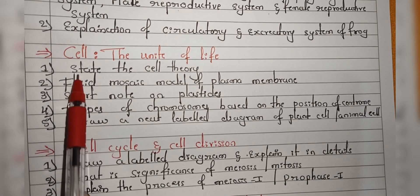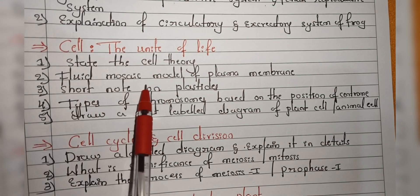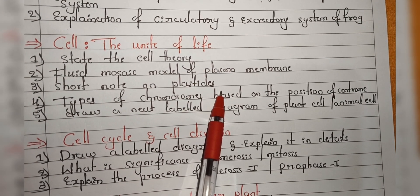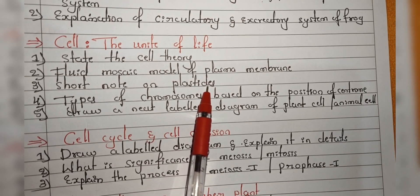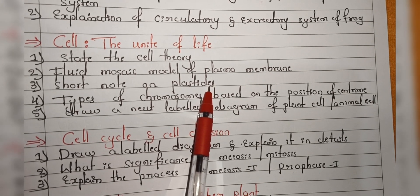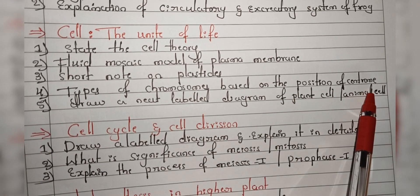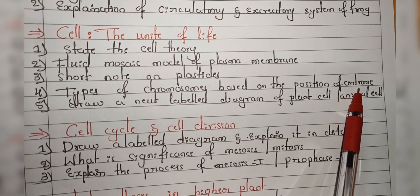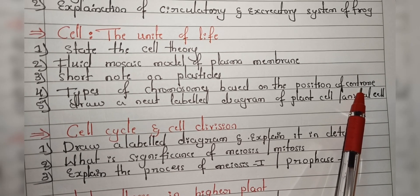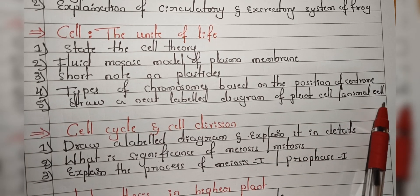Next chapter is Cell. From the cell chapter, they will ask questions on cell theory and the fluid mosaic model of the plasma membrane. Write a short note on plastids — you have to write all three types of plastids. Sometimes they will ask specifically on chloroplasts. Next, the types of chromosomes based on the position of the centromere — you have to write the four types with a diagram. Also, draw a neat labelled diagram of the plant cell or animal cell.